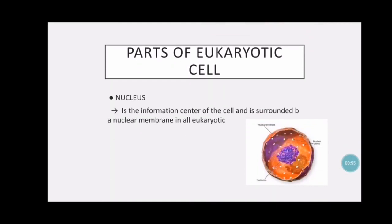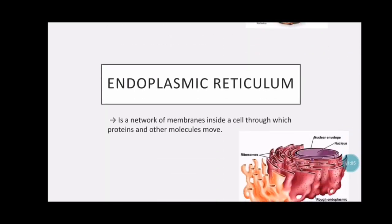Parts of eukaryotic cells. Number one is the nucleus, which is the information center of the cell and is surrounded by a nuclear membrane in all eukaryotic cells.